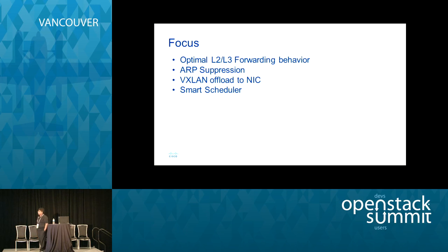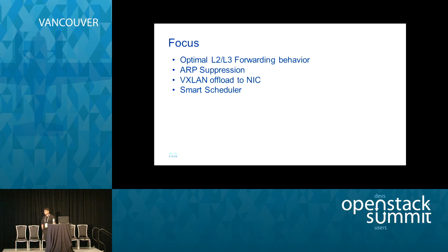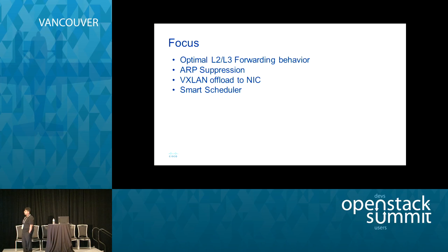There are four different areas where we are looking to optimize performance. One is L2 and L3 packet forwarding behavior — we want optimal behavior. ARP suppression is another one. There are good reasons why ARP exists, but all L2-related security vulnerabilities we face today are due to ARP as well. We want to suppress ARP at the right place. We are also looking at VXLAN offload to be done on the NIC, and a smart scheduler. Those are the four areas.